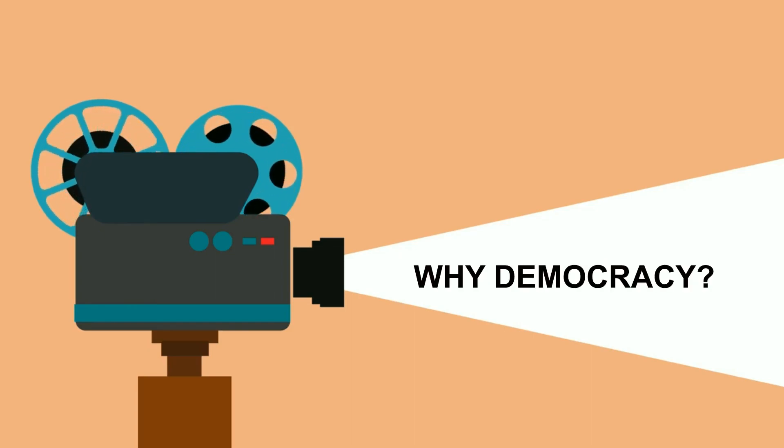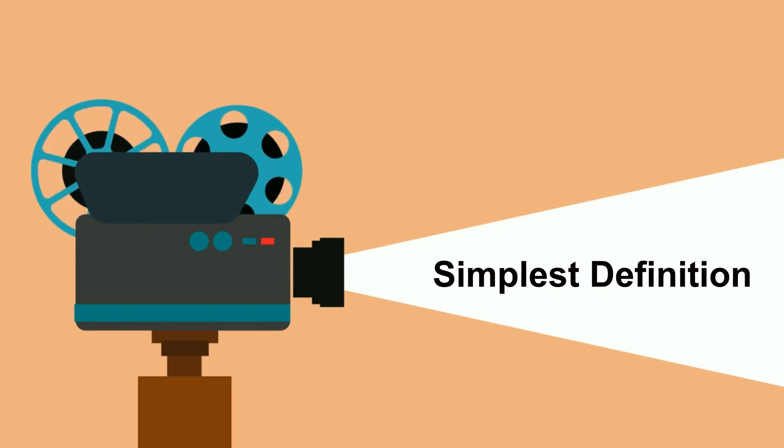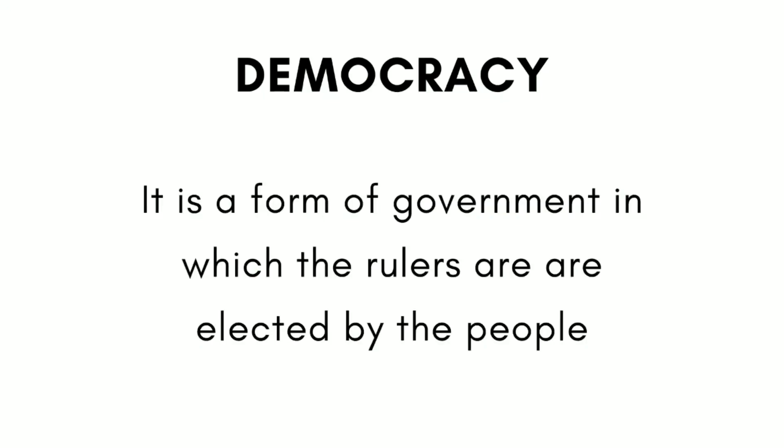In this video, we are going to visit our first lesson from civics: What is democracy? Why democracy? Let us first know the simplest definition of democracy. Democracy is a form of government in which the rulers are elected by the people.